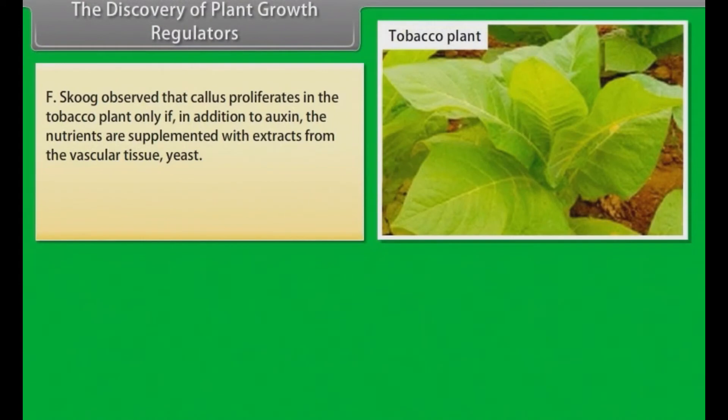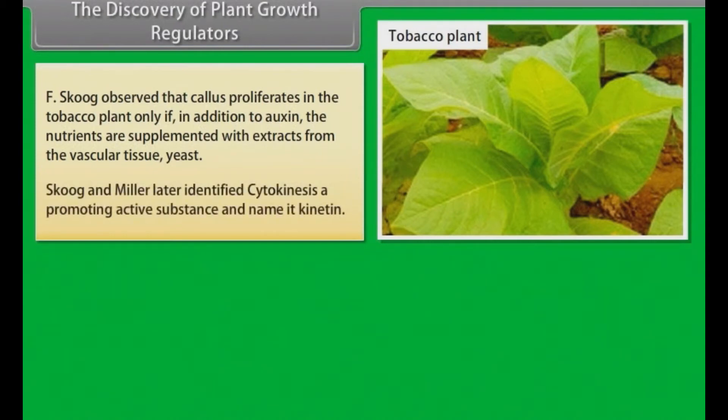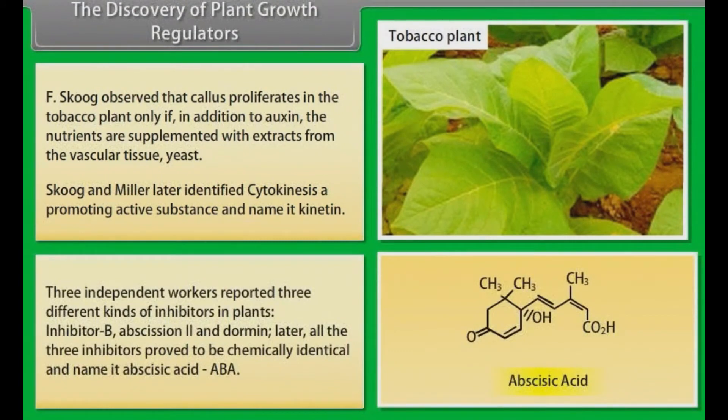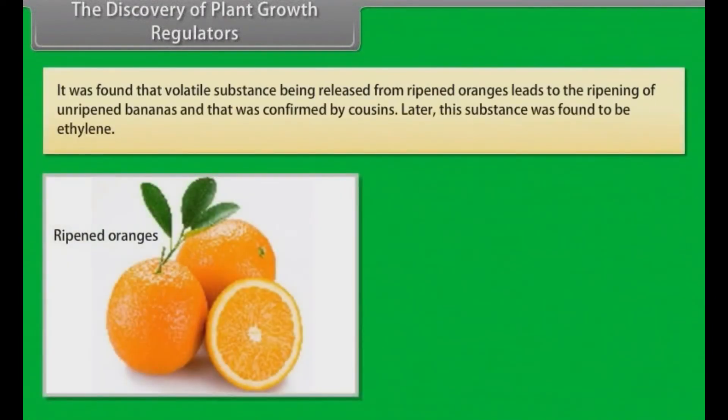The Discovery of Plant Growth Regulators. F. Skoog observed that callus proliferates in the tobacco plant only if, in addition to auxin, the nutrients are supplemented with extracts from the vascular tissue, yeast. Skoog and Miller later identified cytokinin, a promoting active substance, and named it kinetin. Three independent workers reported three different kinds of inhibitors in plants: inhibitor B, abscission-2, and dormin. Later, all the three inhibitors proved to be chemically identical and named it abscisic acid, ABA. It was found that volatile substance being released from ripened oranges leads to the ripening of unripened bananas and that was confirmed by Cousins. Later, this substance was found to be ethylene.